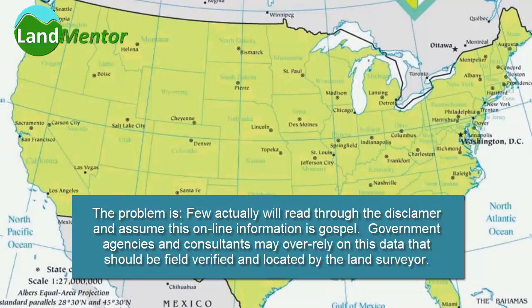But local politicians don't do that. They will likely hold the developer to task should they decide to purchase land encumbered by this likely vague data. There is a possibility that the wetland is either larger, smaller, or in some cases, simply non-existent.